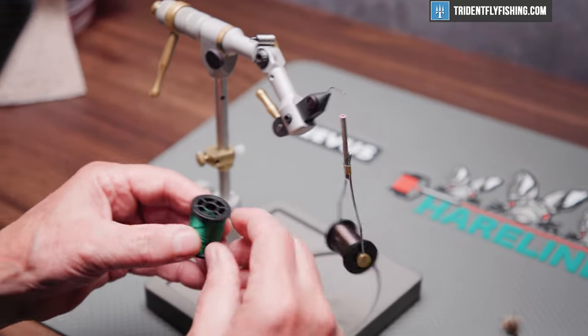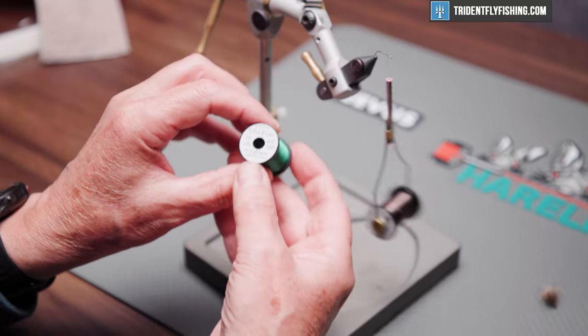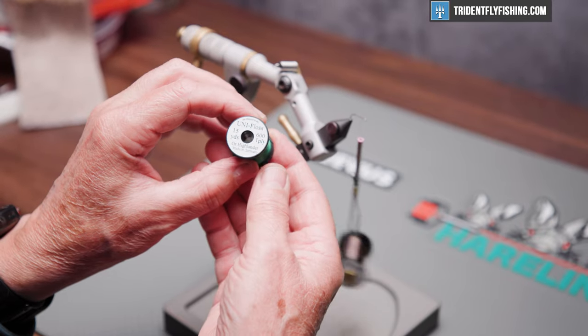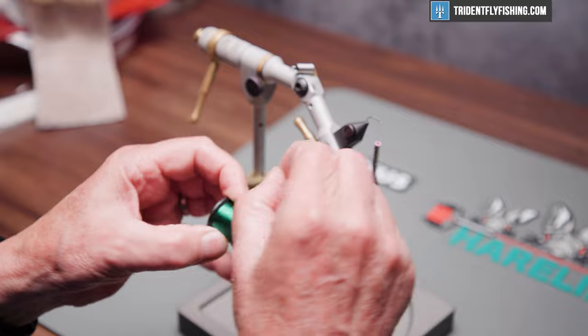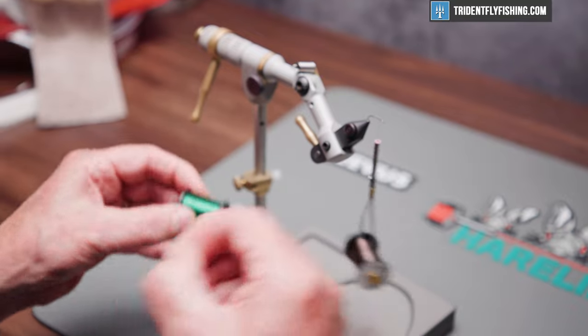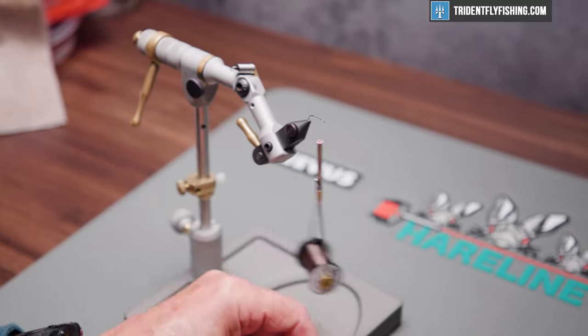And the first material we're going to tie in is going to be some UniFloss in green. This is going to represent the egg sac. If you wish to tie the male version of this fly, just eliminate this step.